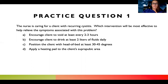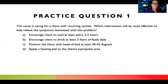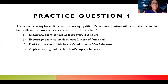My first answer choice is encourage client to void at least every two to three hours. That sounds pretty good — I definitely want them to go to the bathroom every few hours, and that sounds like something good to help prevent a UTI in general. But I don't know if it's really going to help the symptoms. Choice B says encourage client to drink at least two liters of fluid daily. Again, probably something really good, but it doesn't seem to be answering the question. Once I've gotten two answer choices that are pretty similar and both solving the same problem, they both can't be correct. So I can already cross out A and B.